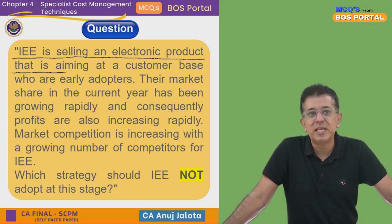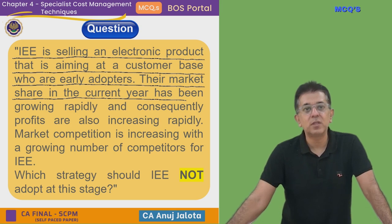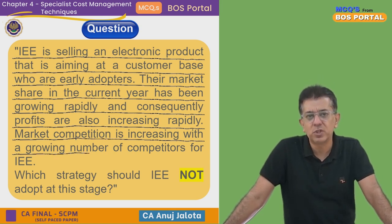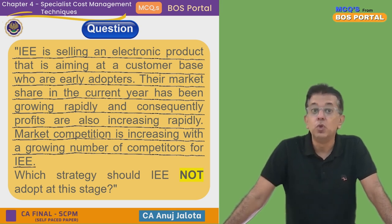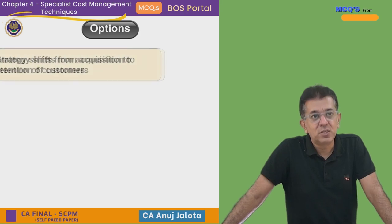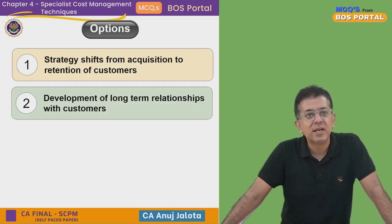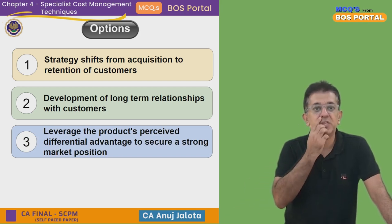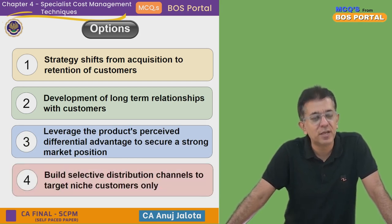IEE is selling an electronic product aimed at customers who are early adopters. Market share in the current year has been growing rapidly, and consequently profits are also increasing. Market competition is increasing with a growing number of competitors for IEE. Which strategy should IEE NOT adopt at this stage? The four options are: first, strategy shifts from acquisition to retention of customers; second, development of long-term relationships with customers; third, leverage the product's perceived differential advantage to secure a strong market position; fourth, build selective distribution channels to target niche customers only.